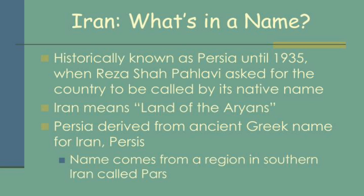Historically known as Persia until 1935, when Reza Shah Pahlavi asked for the country to be called by its native name. Iran means a land of the Aryans. Persia derived from the ancient Greek name for Iran; Persia's name comes from a region in South-Western Iran called Persis. Children, you all understand that Persia is the old name of Iran. Iran is the new name of Persia.